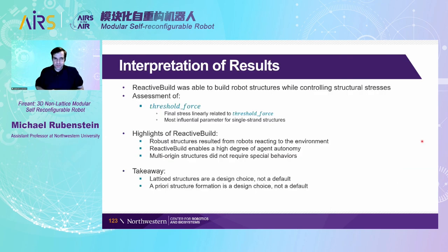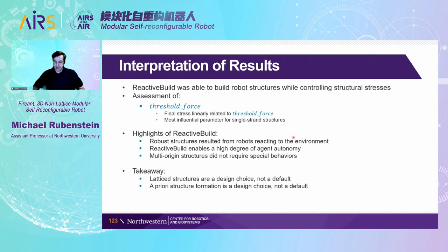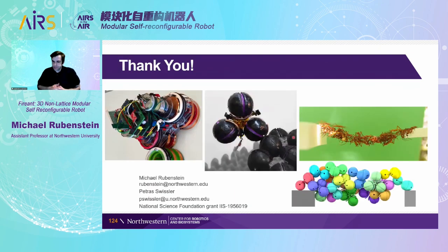Some highlights of this reactive building approach: we're able to build structures with a high degree of autonomy on individual agents, we can build multi-origin structures like a bridge from right to left, and we can control the total force in the structure with a simple threshold force parameter. The takeaway is that these robots operate outside of a lattice, and sometimes that is actually easier — you don't have to worry about connections between individual modules or the errors that occur when building structures out of lattices. I want to thank NSF for funding this, and this project is being done by my PhD student Petra Swistler.